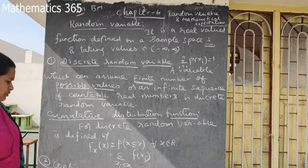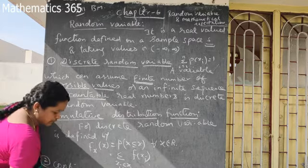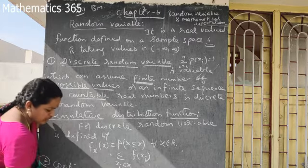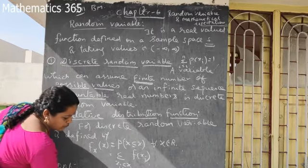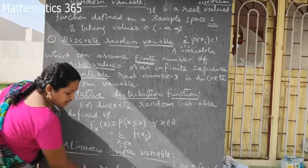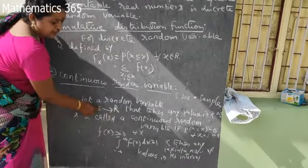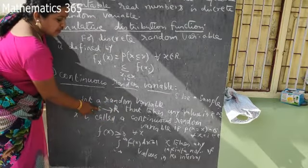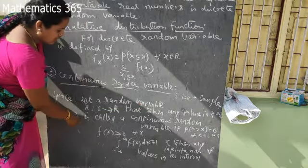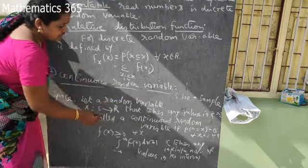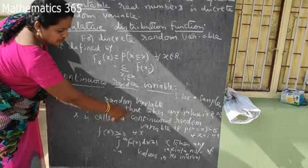For a continuous random variable, the sample space maps from S to R. The random variable X can take any value in an interval in R, or a set I. When the set of possible values is an interval, X is called a continuous random variable.